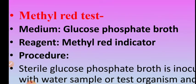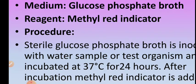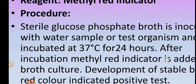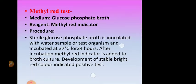The second test is the methyl red test. The medium used is glucose phosphate broth, also available in the market as MRVP broth — MR for methyl red, VP for Voges-Proskauer. The same medium is used for both tests. The reagent used for color development is methyl red indicator. Prepare and sterilize the glucose phosphate broth, inoculate with the water sample or test organism, and incubate at 37 degrees Celsius for 24 hours. After incubation, add methyl red indicator. Development of stable bright red color indicates a positive methyl red test; development of yellow color indicates a negative test.